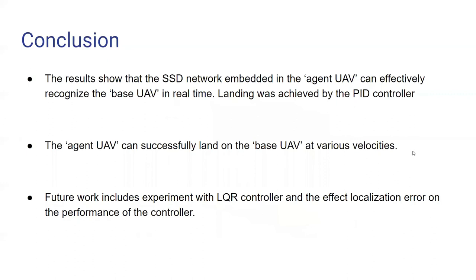So with these results, we could conclude that the object detection based convolutional neural network-based object detection method to perform the landing, to detect the base UAV and to perform the landing is a robust method to do the landing operation and which could be demonstrated through the agent UAV successful landing on all of these trajectories with all different velocities for all of these trials.